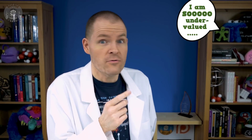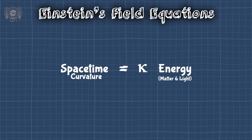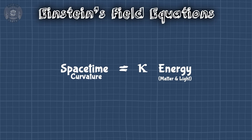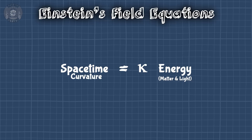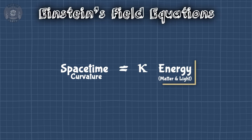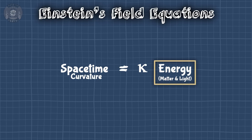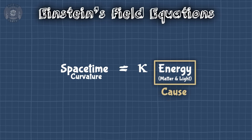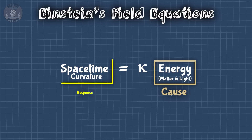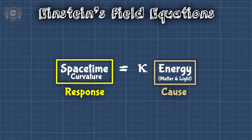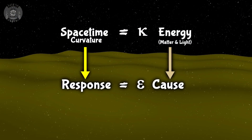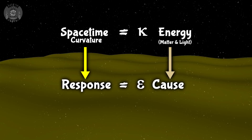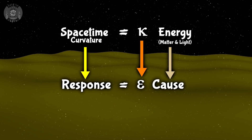I feel like I've seen a relationship like this before. Right — Einstein's equation. Earlier we saw that spacetime curvature is proportional to energy. In fact, that energy is the reason spacetime curves, which makes it the cause, and the curvature is the response. It's the same equation! That means if spacetime were some kind of material, this constant would be its elasticity.